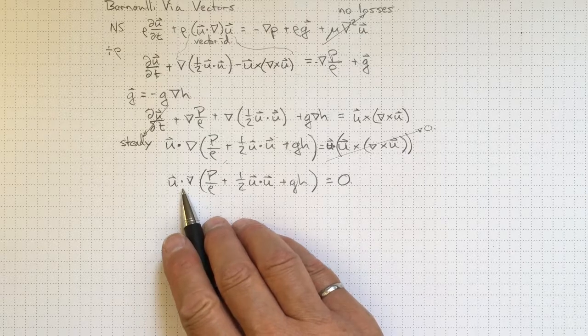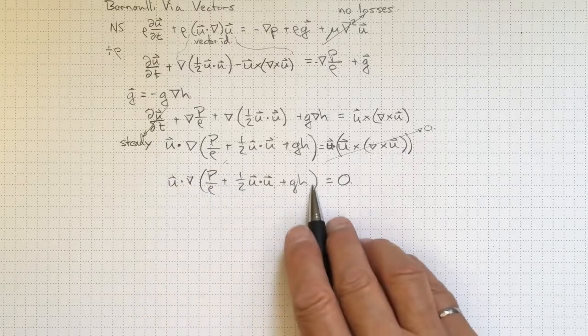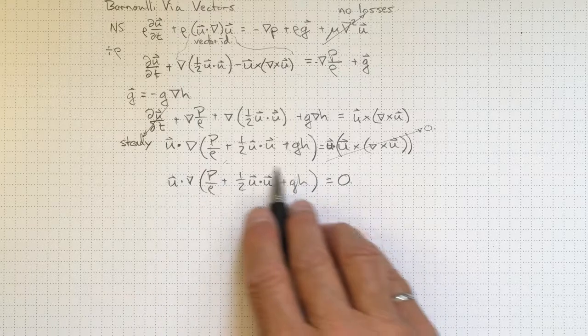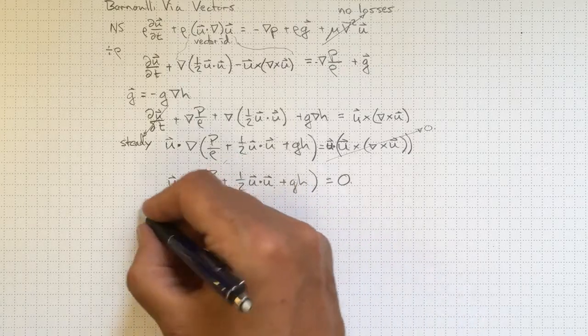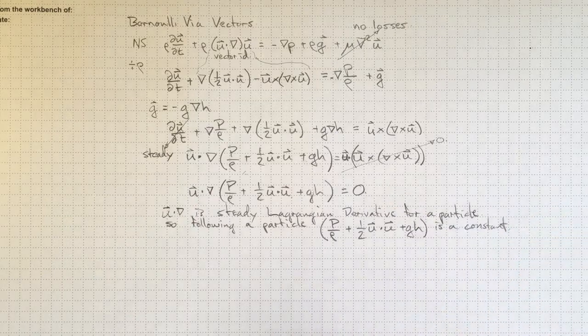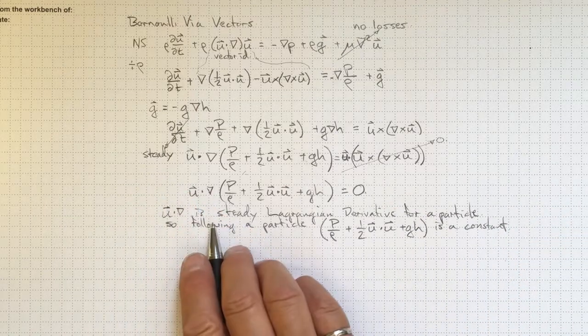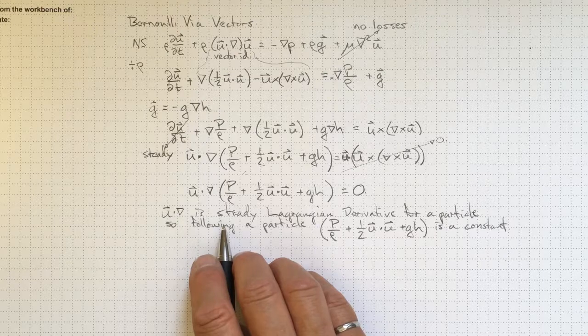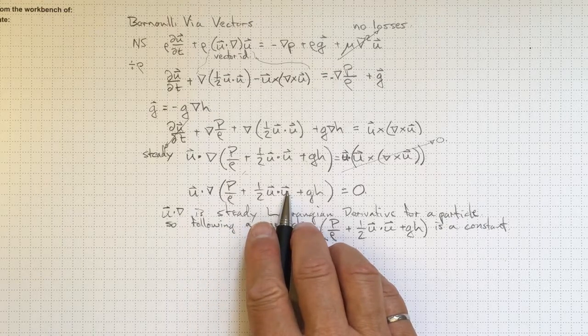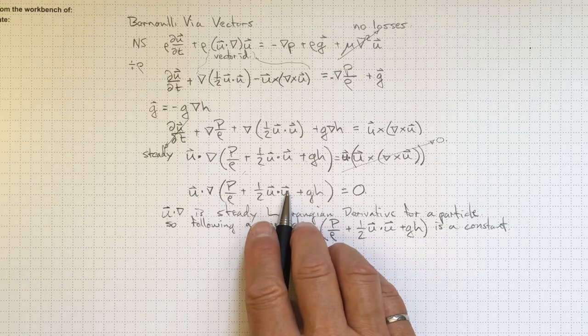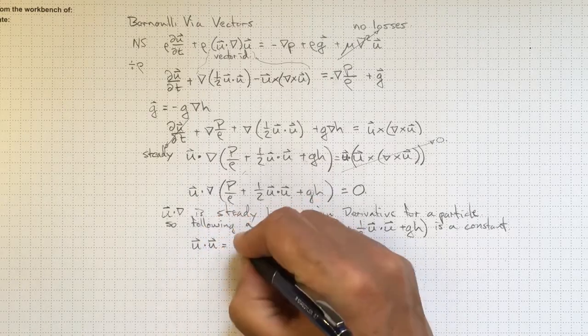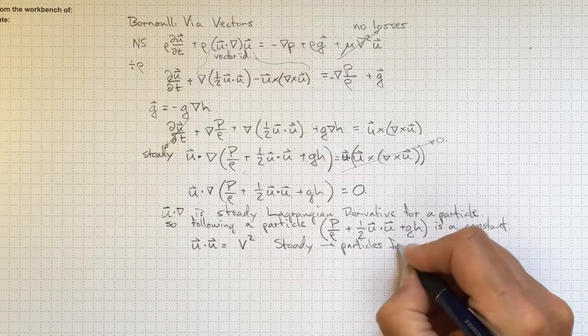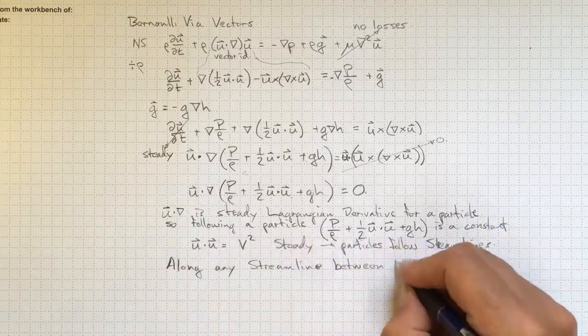Now u dot grad is a steady Lagrangian derivative for a particle. So this is taking the steady Lagrangian derivative of whatever's inside the brackets here, and that's saying then that if we follow that particle, then that total quantity will be a constant. Now we're in a steady flow, and in steady flow, a particle follows a streamline. Path followed by a particle goes along a streamline. And the dot product of the velocity with itself, anywhere, is the square of the magnitude of the velocity. So u dot u, we'll call capital V squared, and because we're in steady flow, particles follow streamlines.